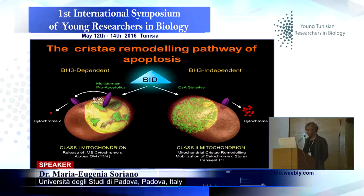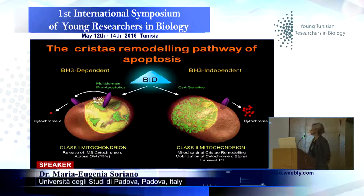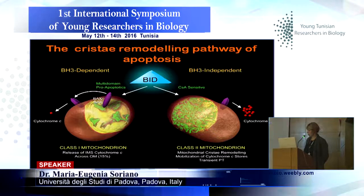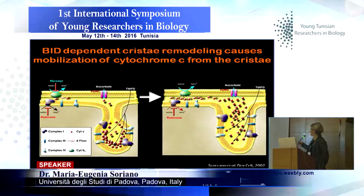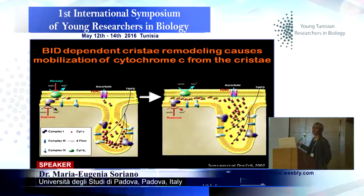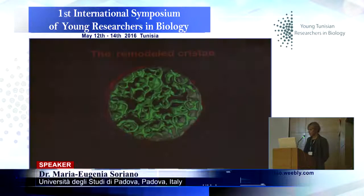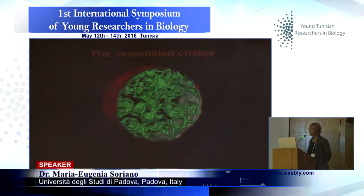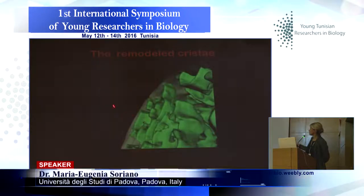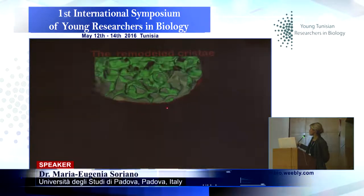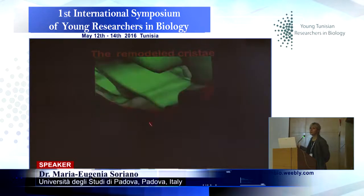The cristae remodeling pathway was difficult to explain until its discovery. The cristae remodeling is activated during apoptosis and induces the widening of the cristae junction, which allows the diffusion of cytochrome C to the intermembrane space, facilitating the release of cytochrome C and activation of the apoptosis pathway. This is how a remodeling cristae looks — the cristae are interconnected and the cristae junctions are wider than in non-remodeling cristae.